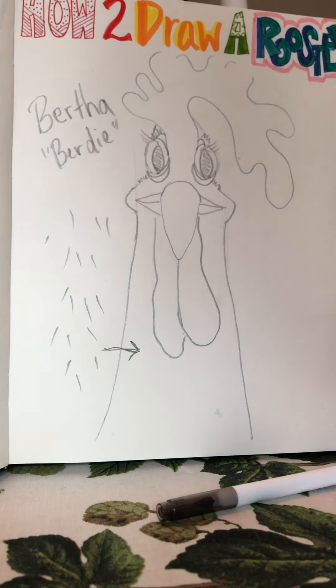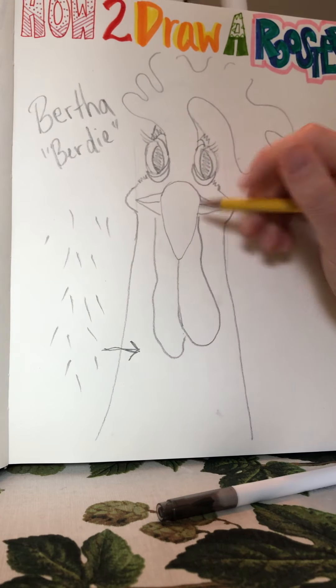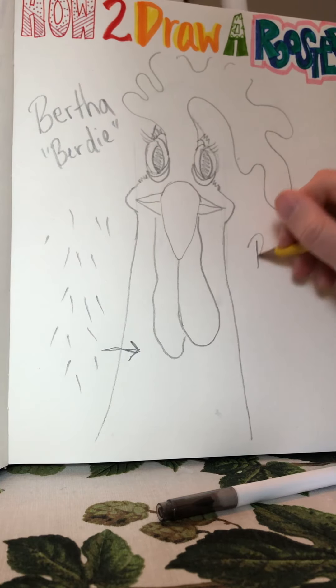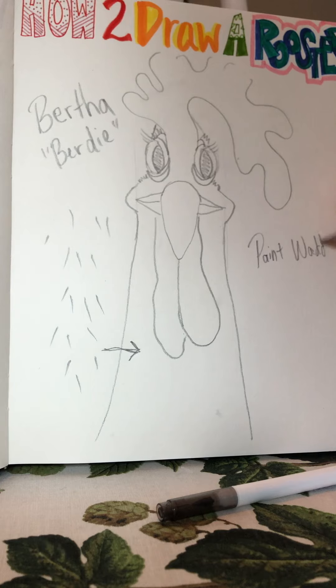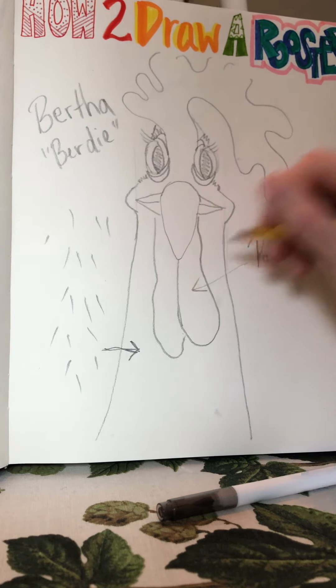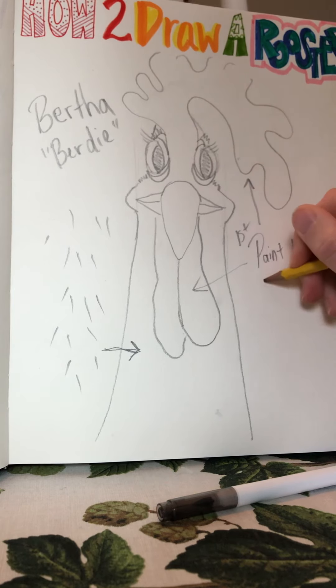And I always paint the red parts first. So if I were you, make sure you paint the waddle, which is this. Paint that first. And then also the comb or the head.